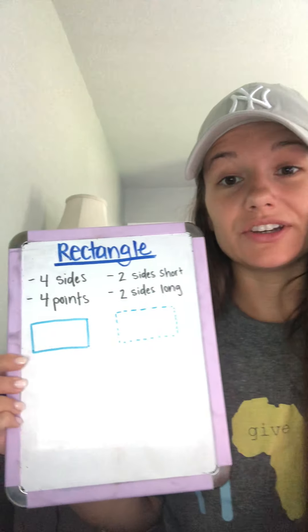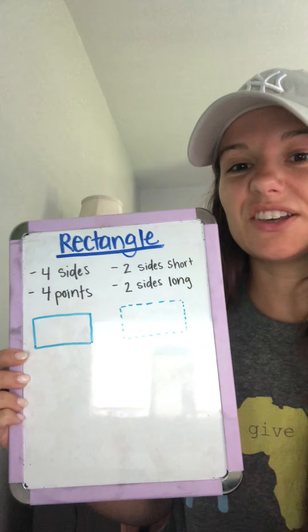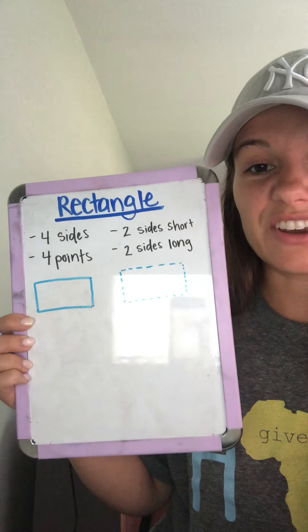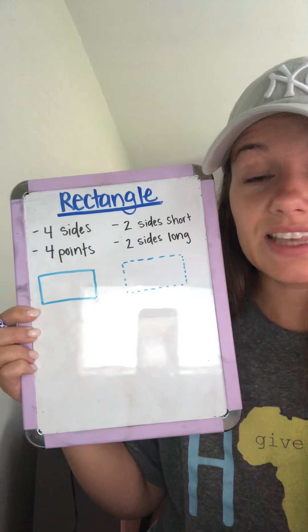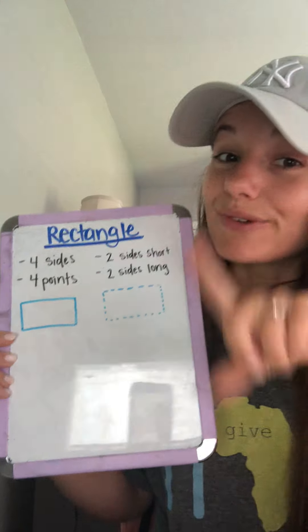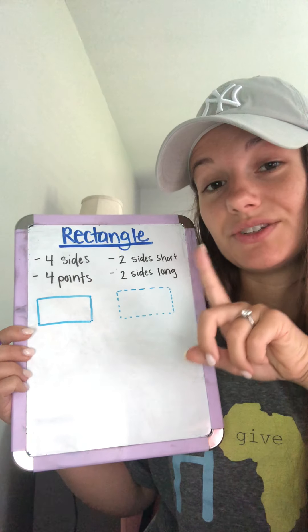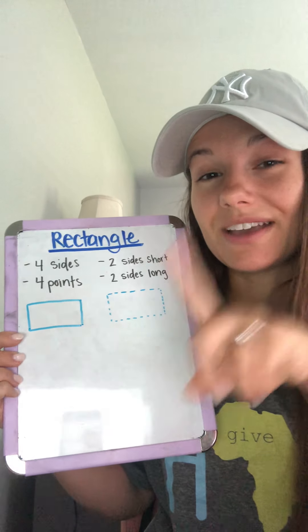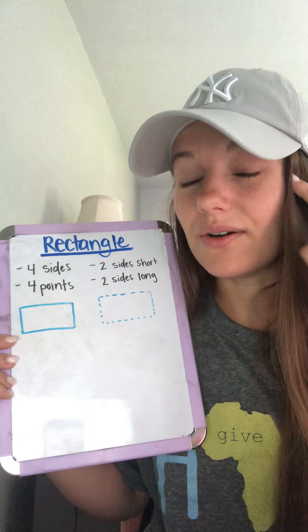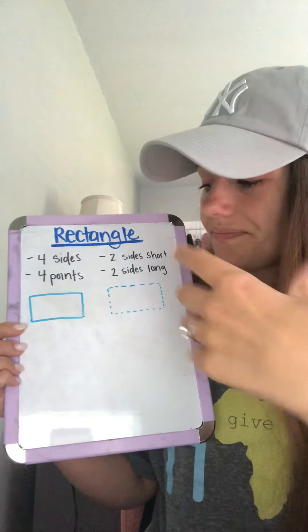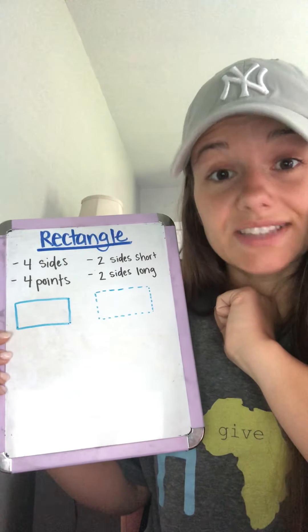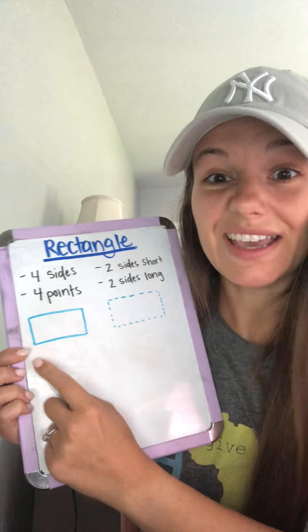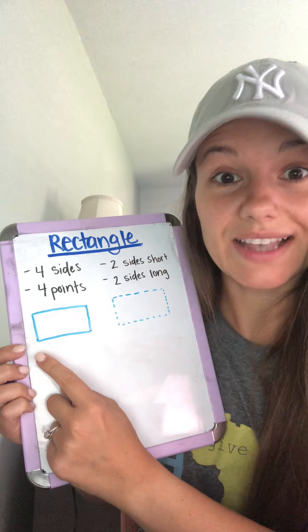A rectangle might look kind of familiar to you because it looks very similar to a square, at least to me it does. The reason why I say it looks very similar to a square is because we know that a square has four sides, and a rectangle has four sides.